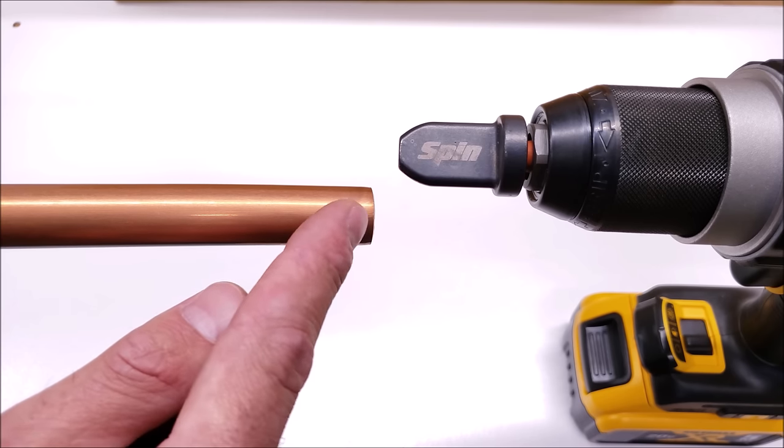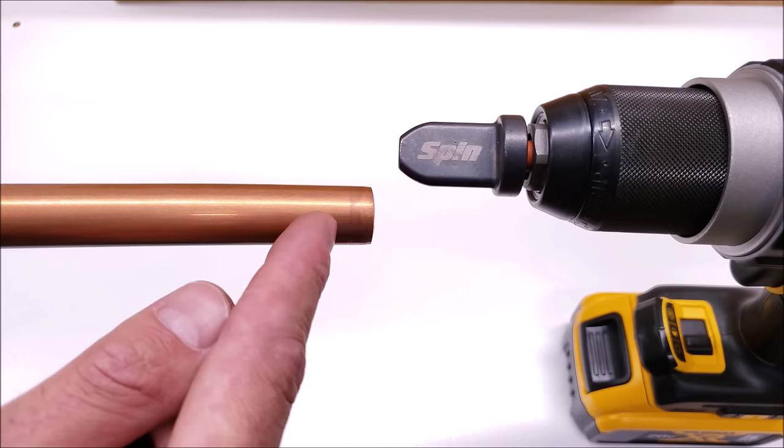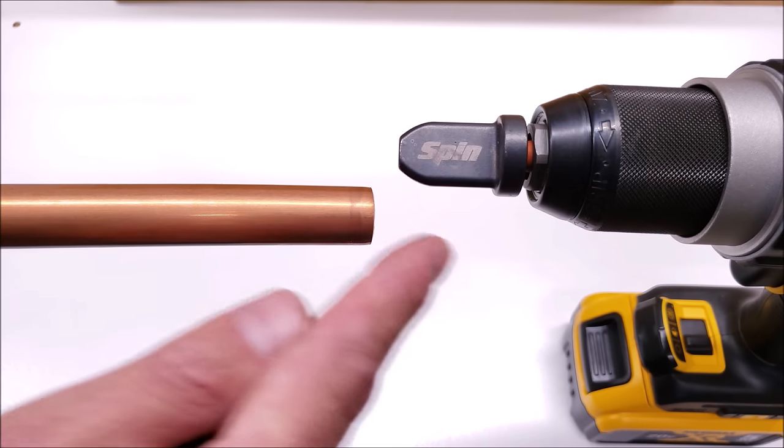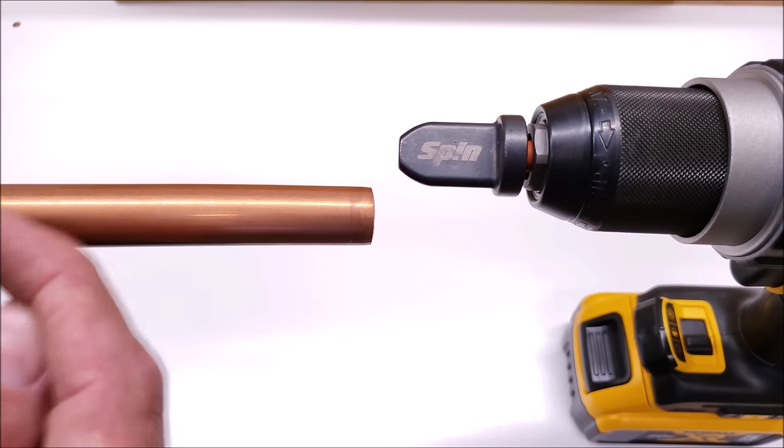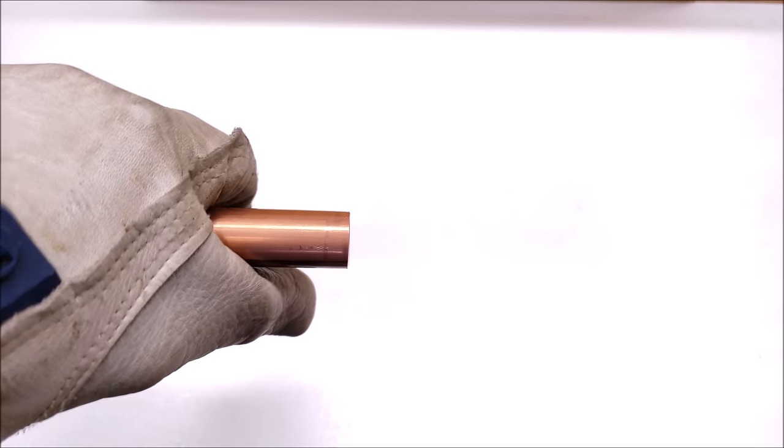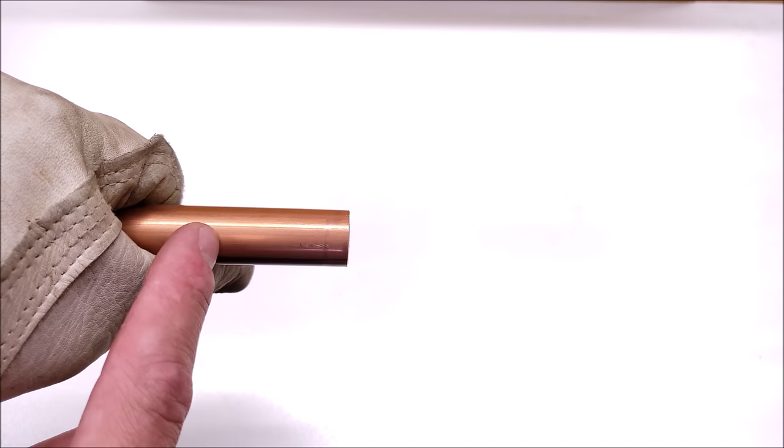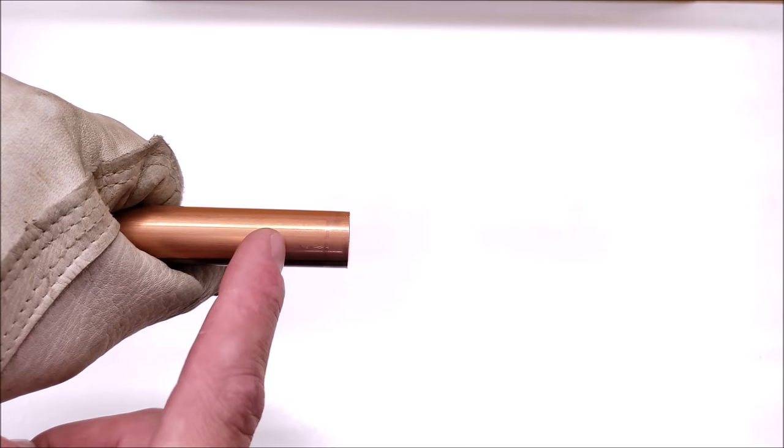You want to make sure that this tube is faced downwards while you're swaging it just to make sure that any copper dust falls out of the tube instead of down inside the tube. You want to make sure to hold onto this copper tube with a glove because it's going to heat up real quickly due to the friction while we're swaging it.